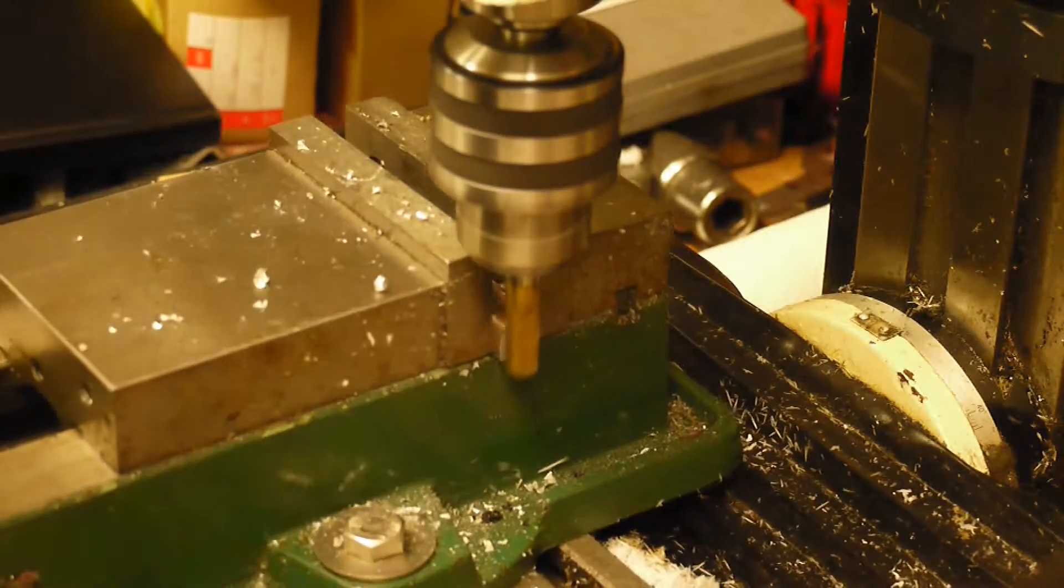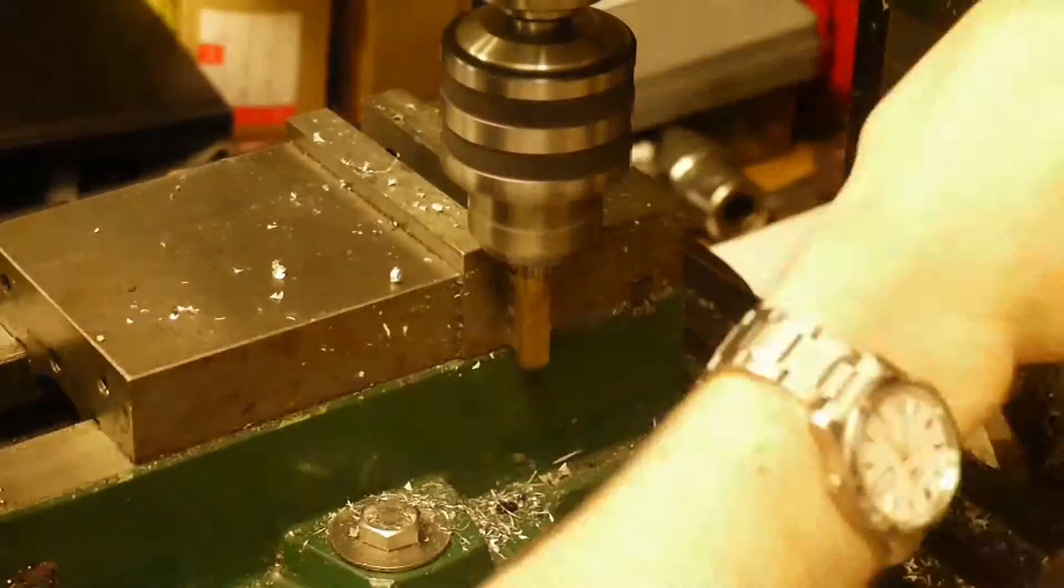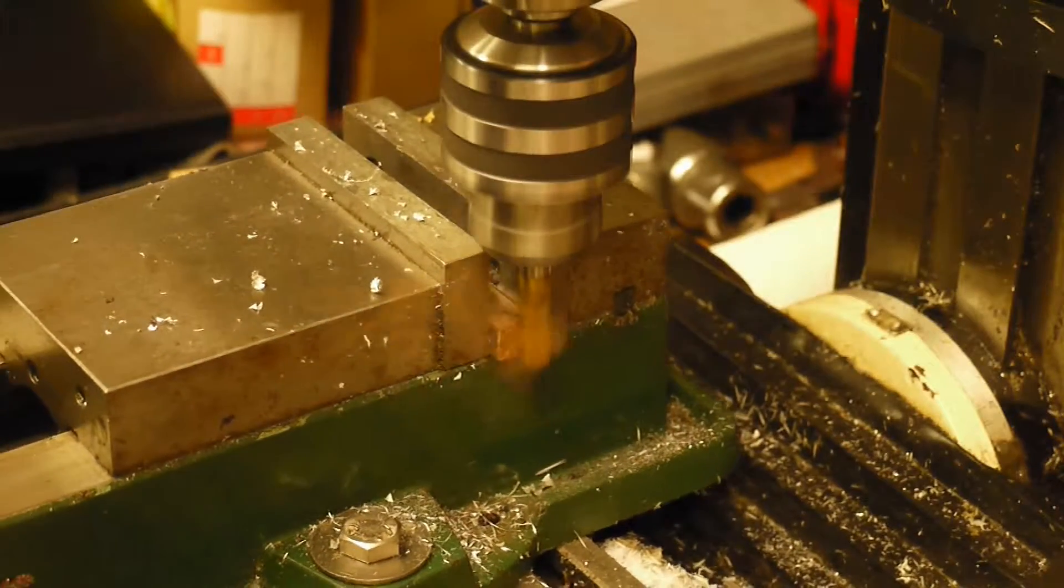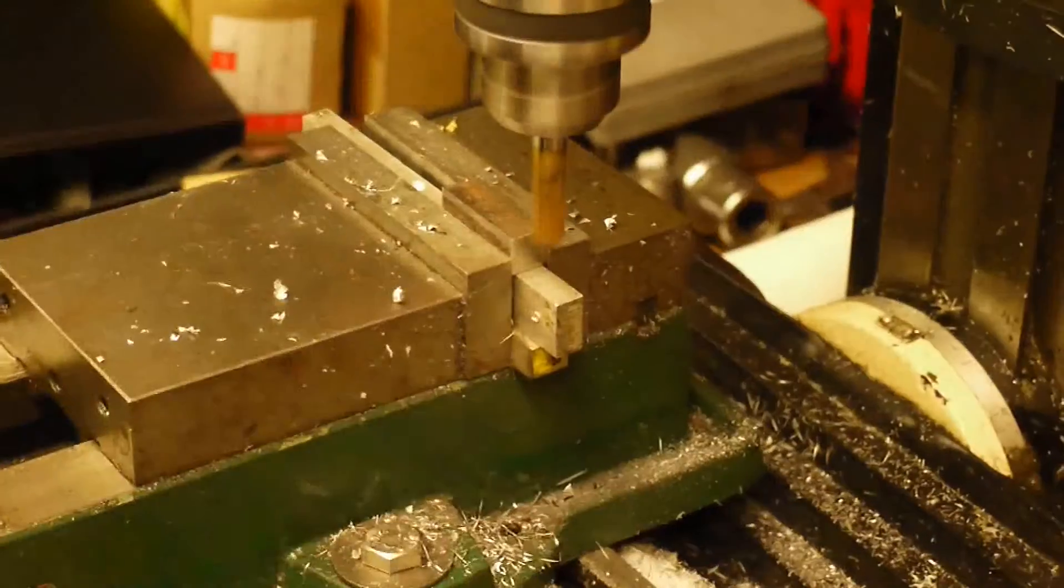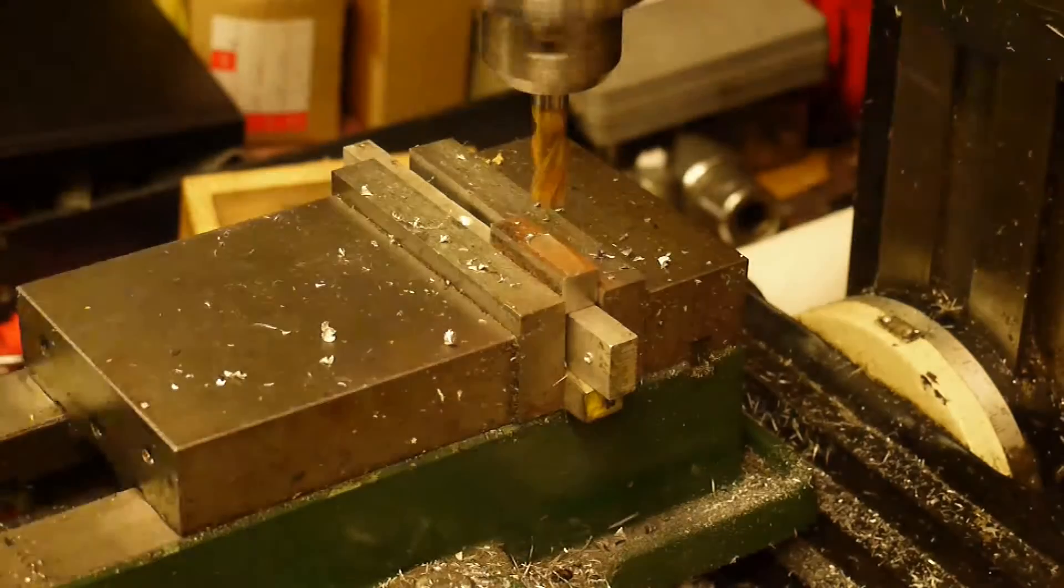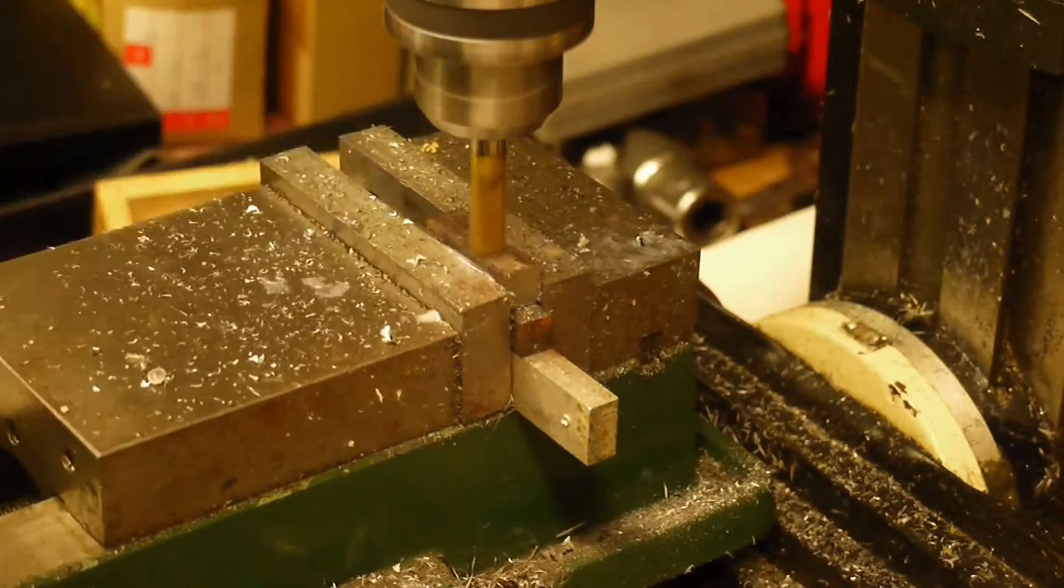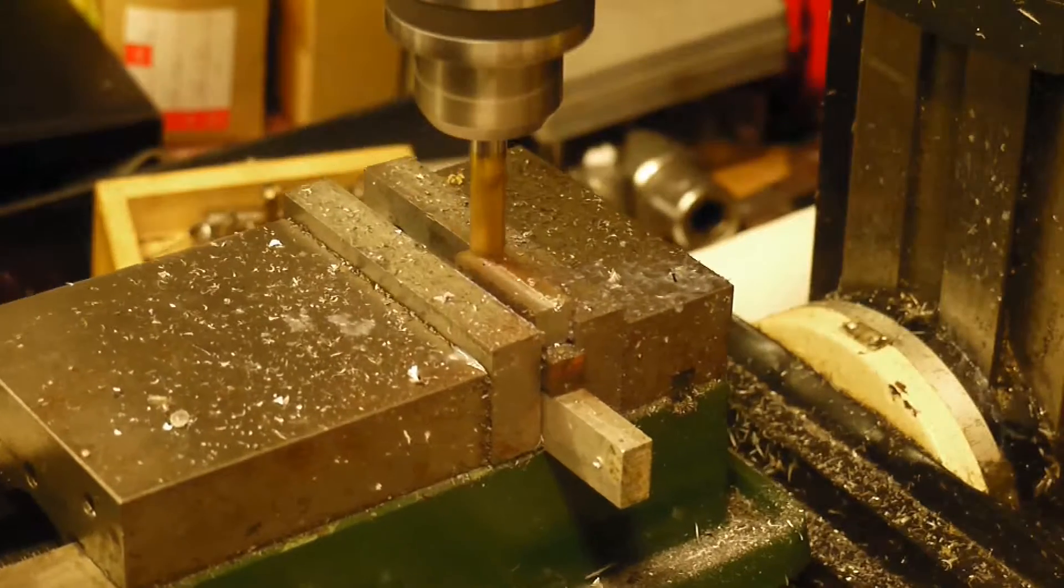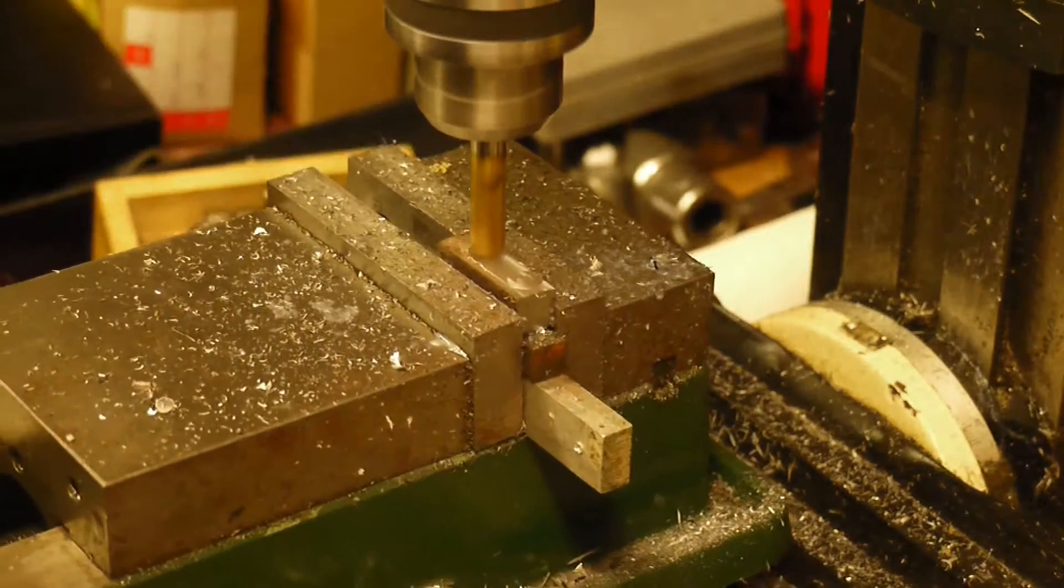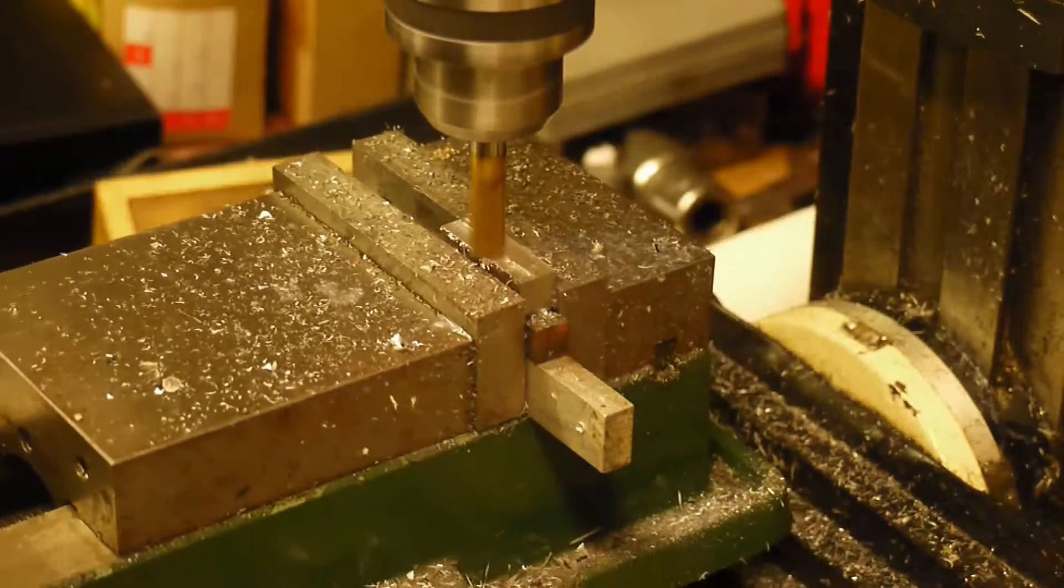Okay, so we're going to start by facing off the two ends, and we're just going to face off the sides. Here I noticed that the piece was moving. So now I'm just taking facing cuts off with the end mill. Later I decided that taking thin, sideways cuts was a better idea for taking lots of material off with this mill.